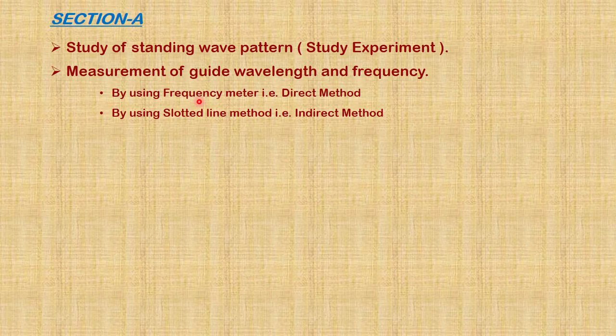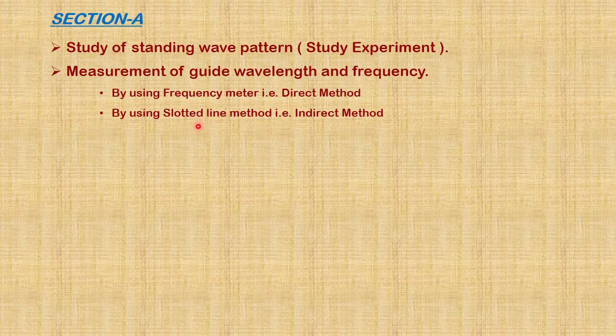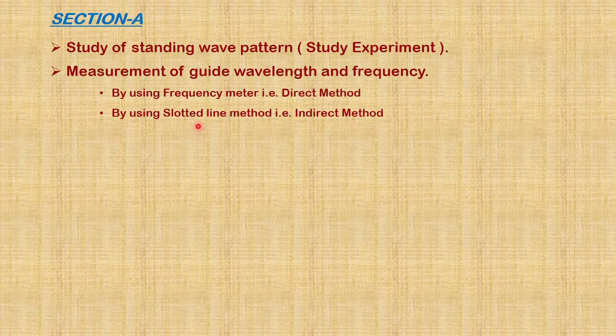By using this method, we are not able to find out wavelength, so we shift to the second method, the slotted line method. By using a tunable probe and slotted line section, we are going to find locations of minima or maxima in centimeters. Then by substituting these values into formulas, we get frequency and wavelength.